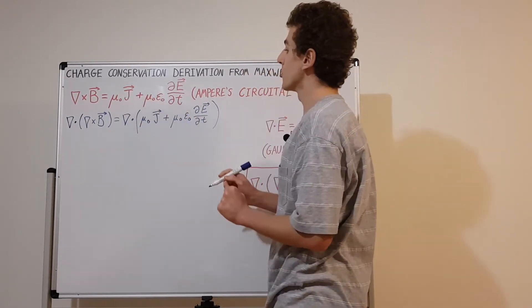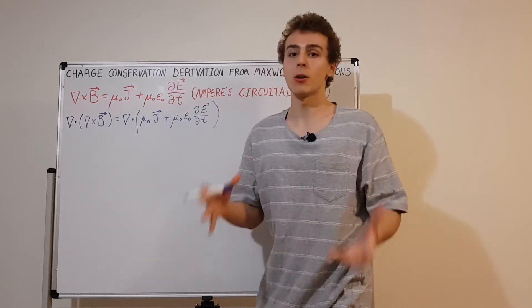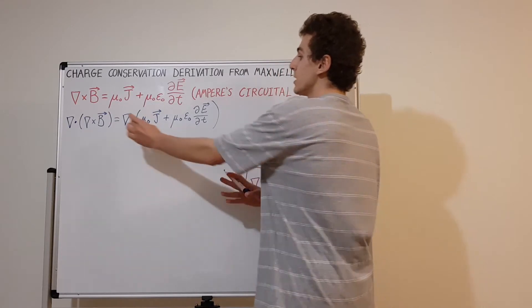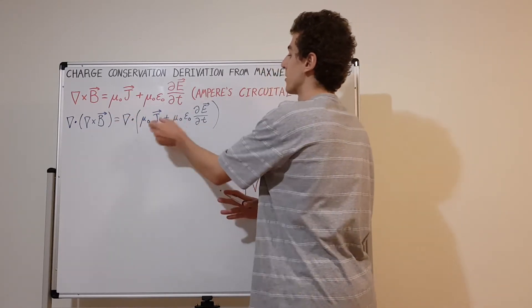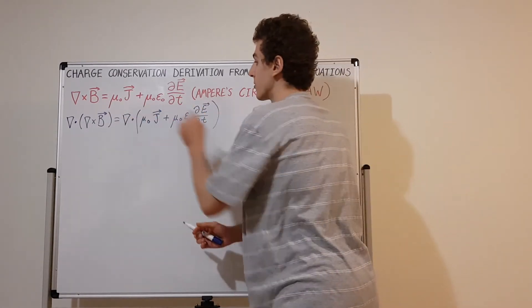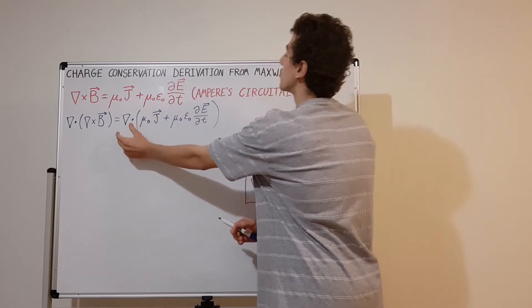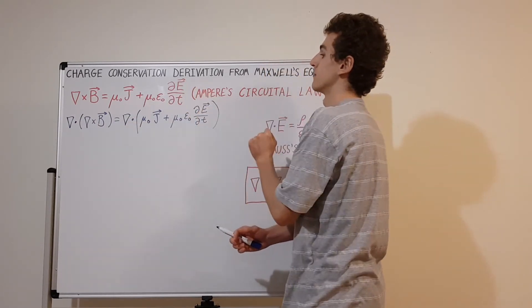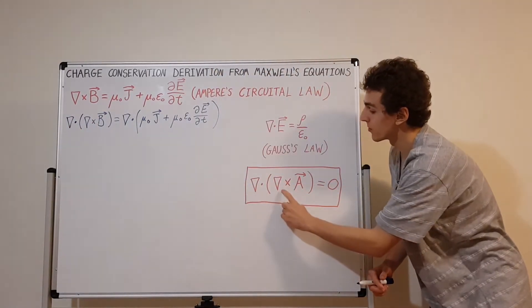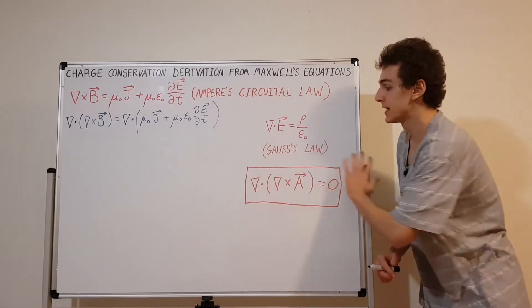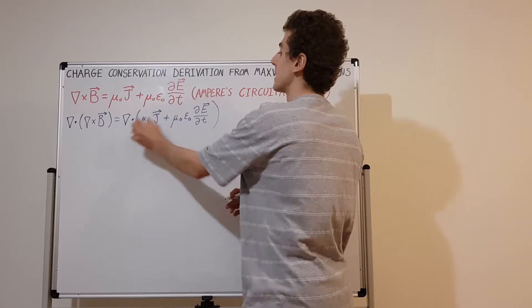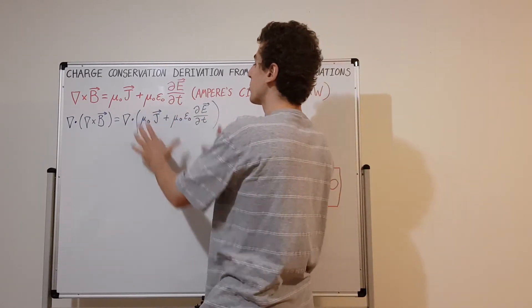Using linearity, we distribute the divergence operator inside, taking constants out front. We can also swap the order of the time derivative and the divergence operator, placing the divergence directly onto the electric field. On the left-hand side, by the vector identity, the divergence of the curl is zero, so that entire side vanishes.